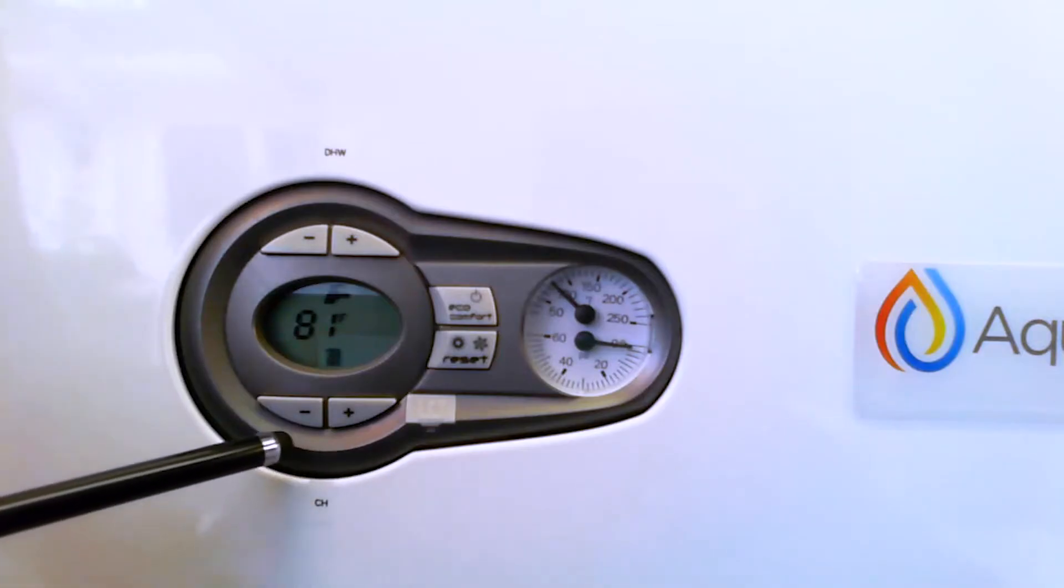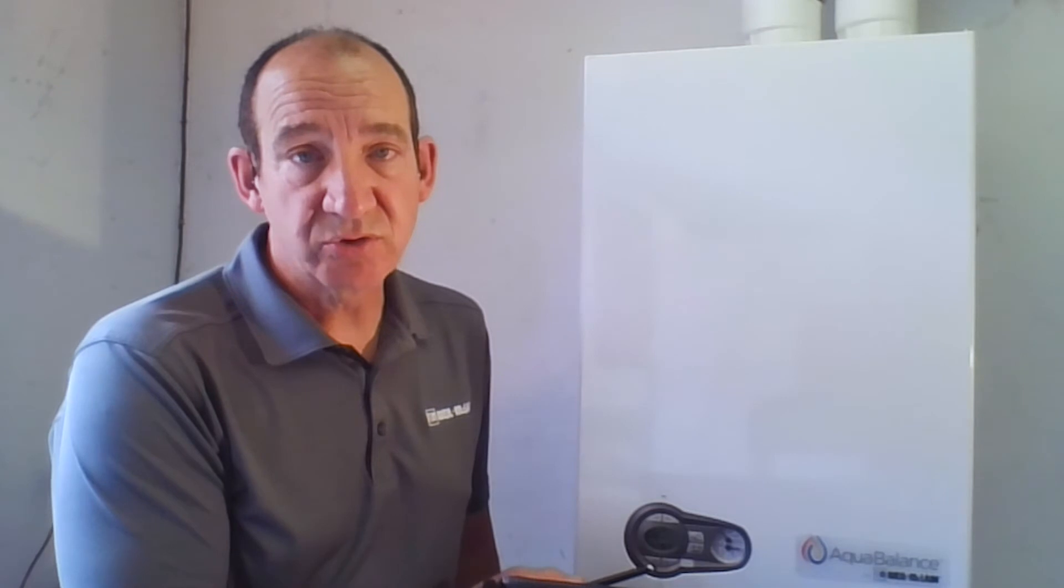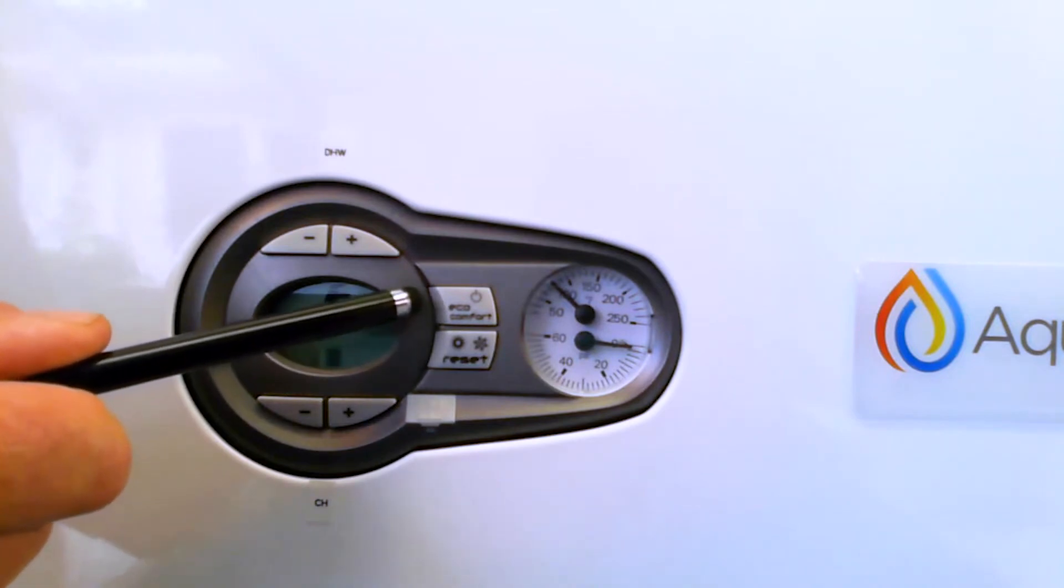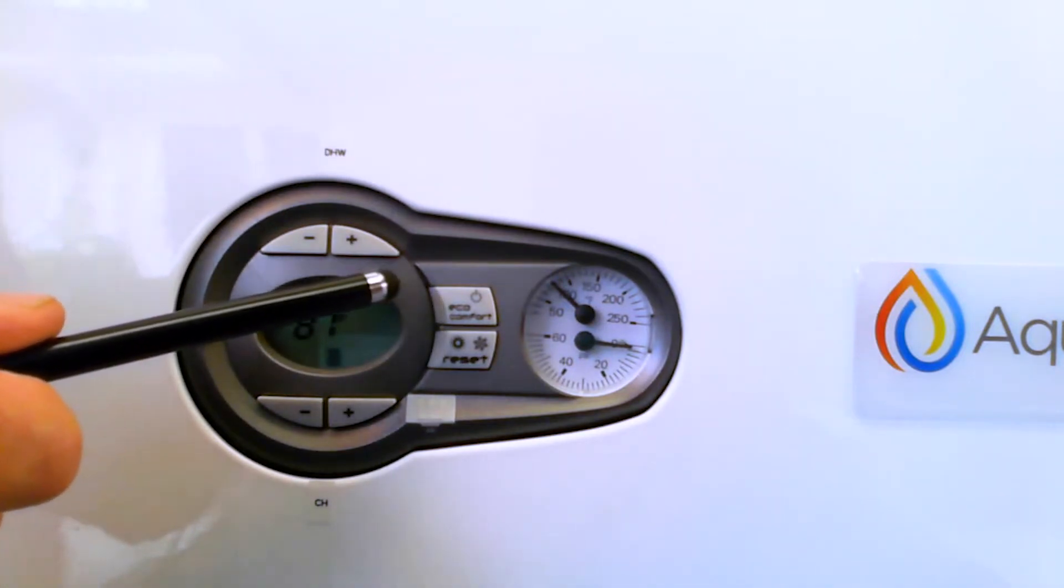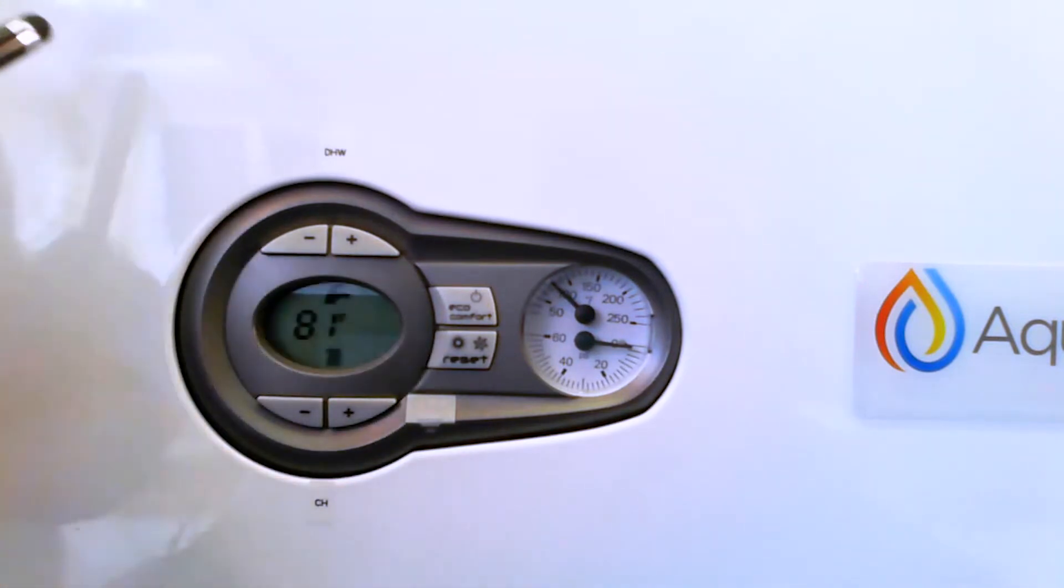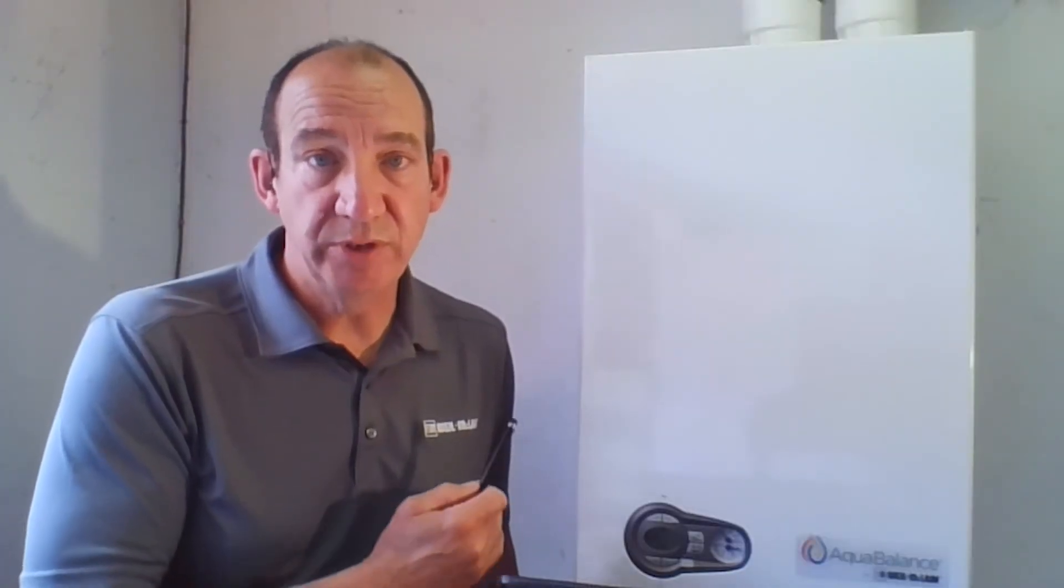And down at the bottom here, we have our central heating plus and minus buttons, and then we can control our central heating from 68 to 194. Over here on the far side, I have this eco comfort slash power button. So multiple functions there. And then right below that is the reset button. All of these buttons have multiple functionality, depending on what you want to do, getting into that controller, looking at parameters and so forth.